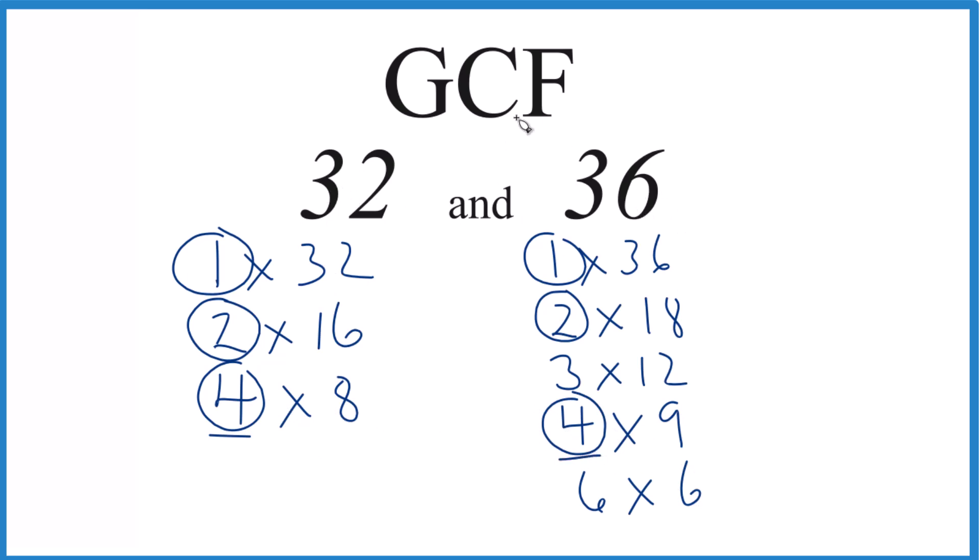It goes evenly into 32 and 36. That's it. There are other ways to do this. You could use prime factorization, but for smaller numbers, this is usually the better way to go. This is Dr. B, and thanks for watching.